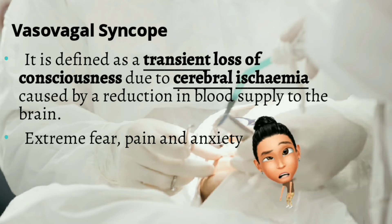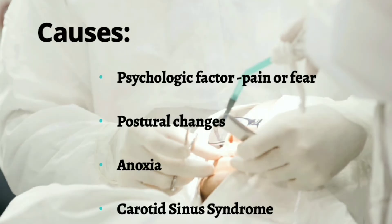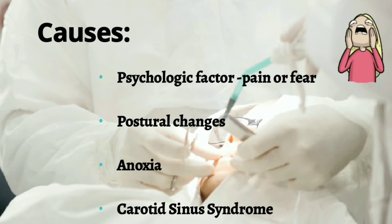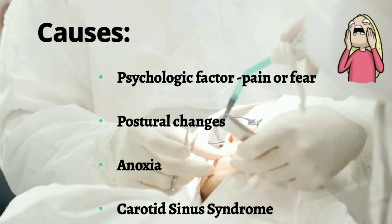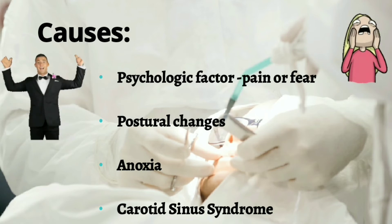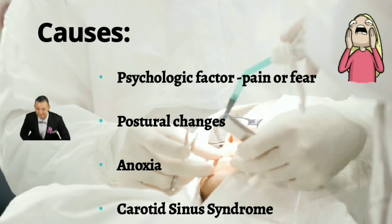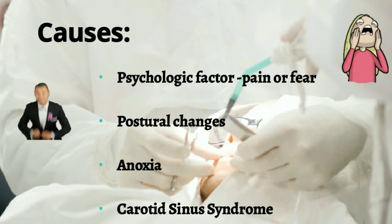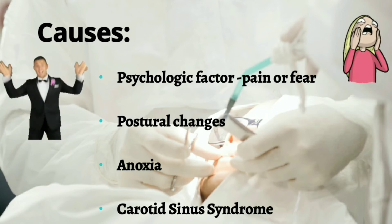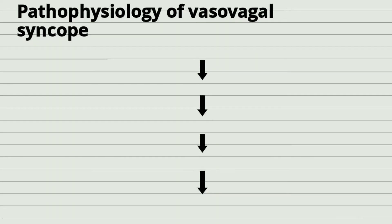The causes of syncope include psychological factors such as pain or fear, postural changes — a sudden change in posture can cause syncope — as well as anoxia and carotid sinus syndrome. Let's now look at the pathophysiology of vasovagal syncope.